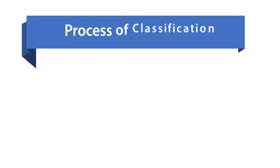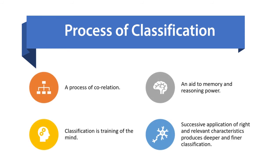Now, coming to the process of classification, what is the process of classification? So, friends, classification is a process of correlation. It is a way of thinking. Thinking systematically and purposefully. It is an aid to memory and reasoning power. Nothing can be defined. Nothing can be identified without classifying that. It means to define an entity, we need to do the classification first. Therefore, classification is the training of mind.